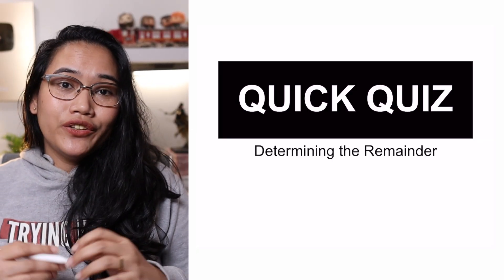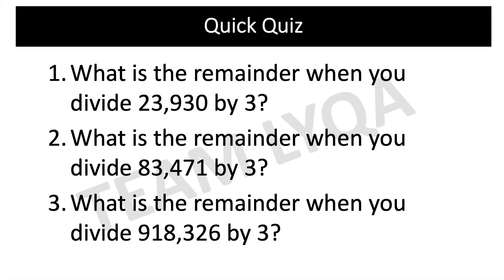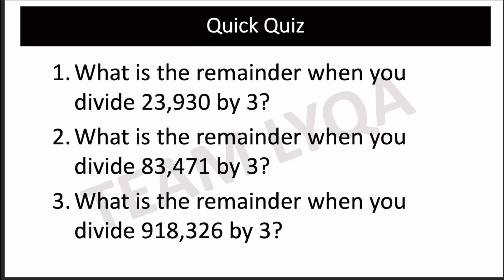Alright, now it's time for your quick quiz. So, if you're ready with your pen and paper, your timer starts now. [Quiz time.] Alright, let's see how you did. We're going to solve these using the divisibility rules technique. 5, 14, 17 — so 17 ang sum ng digits. Pag dinivide ko siya sa 3, this will be 5 remainder 2, kasi 5 times 3 is 15. So, ang sagot sa una is 2 — yan na yung remainder.